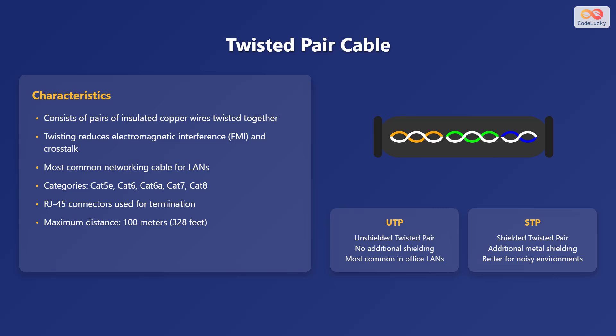Here we will explore twisted pair cable in more detail. Twisted pair cable is a common type of guided media, characterized by its unique construction. It consists of pairs of insulated copper wires twisted together, which reduces electromagnetic interference or EMI and crosstalk. Twisted pair cables are commonly used for local area networks and come in various categories such as Category 5E, Category 6, Category 6A, Category 7, and Category 8.